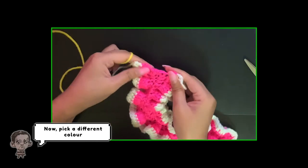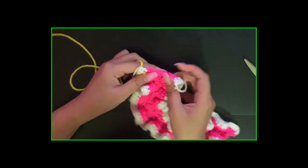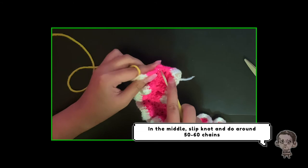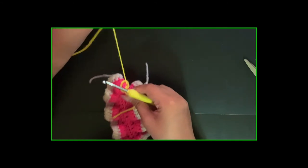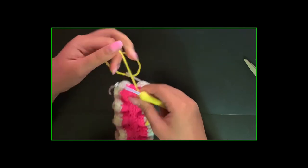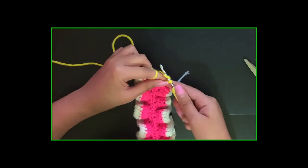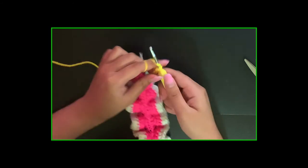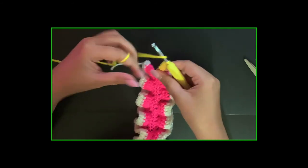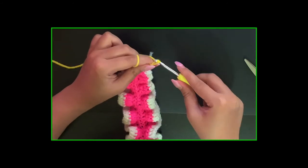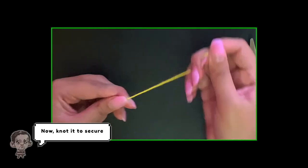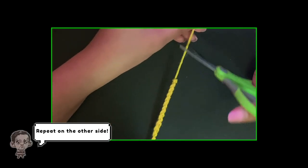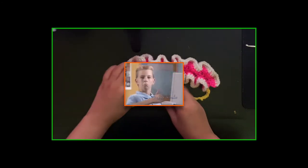Now pick a different color. In the middle, slip knot and do around 50 to 60 chains. Now knot it to secure. Repeat on the other side. And you're done. Wow, great job cutie.